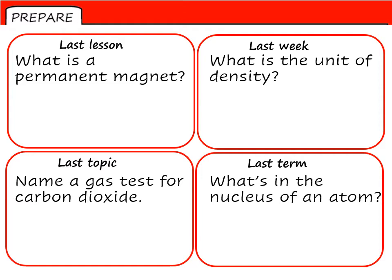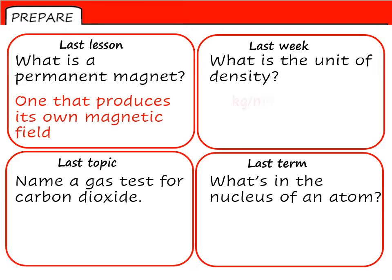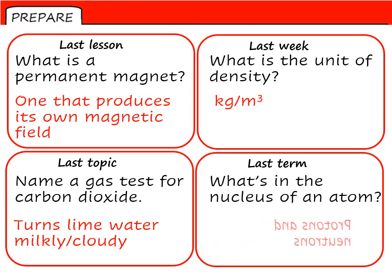Answering the questions. Number 1: A permanent magnet is one which produces its own magnetic field. Number 2: The unit of density is the kilogram per metre cubed. For carbon dioxide it will turn lime water milky or cloudy. And the nucleus of an atom contains both protons and neutrons.